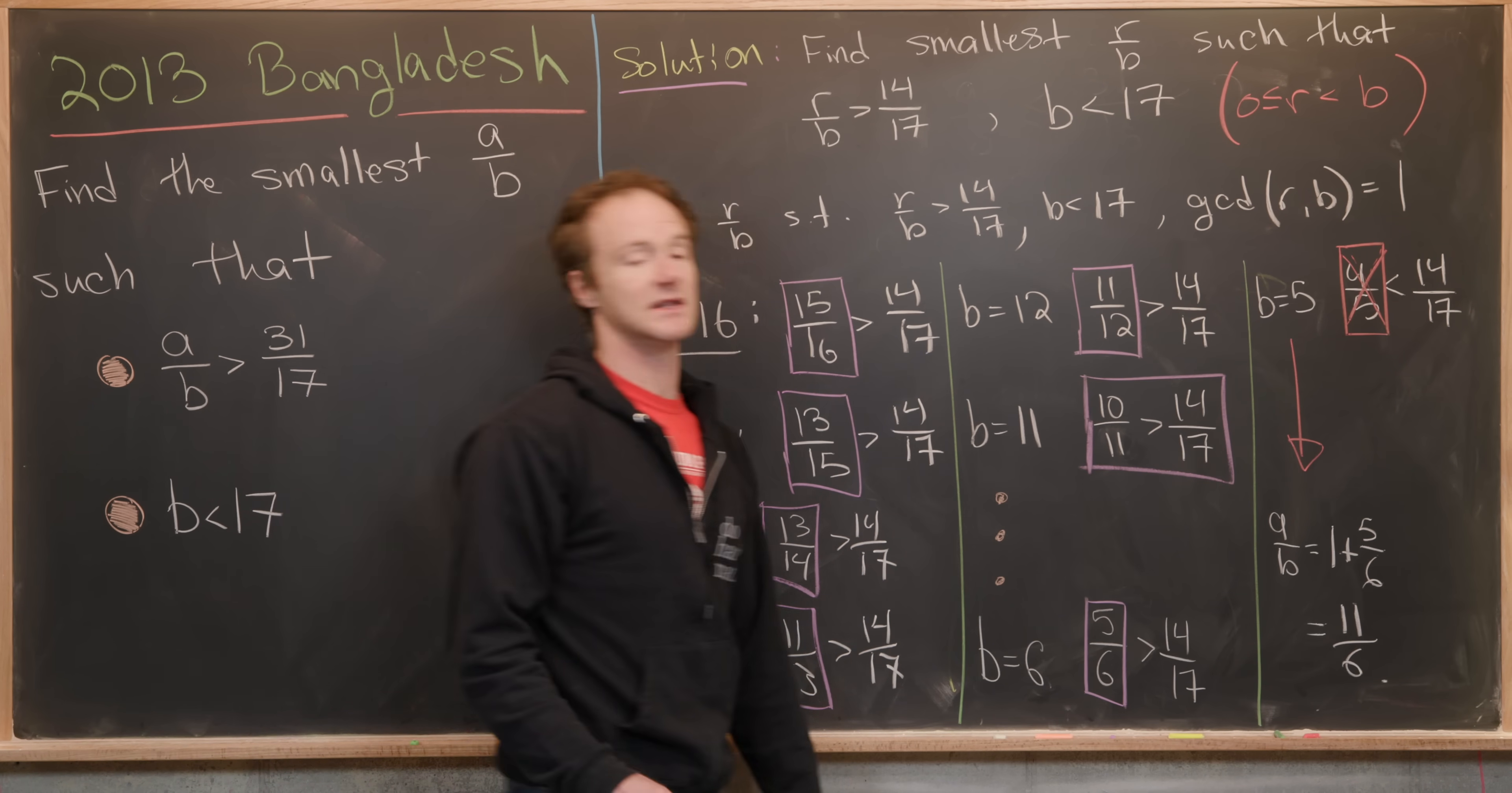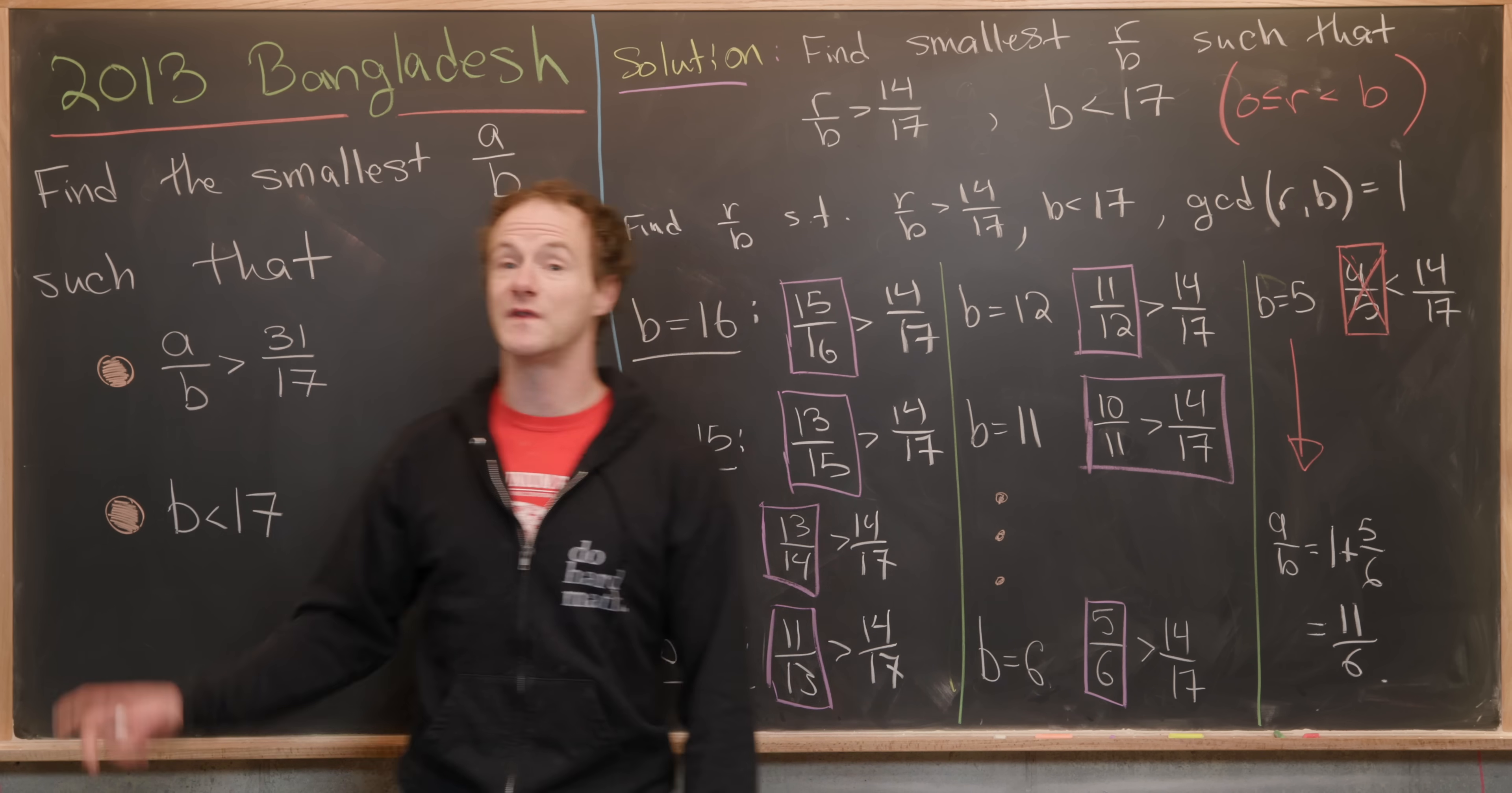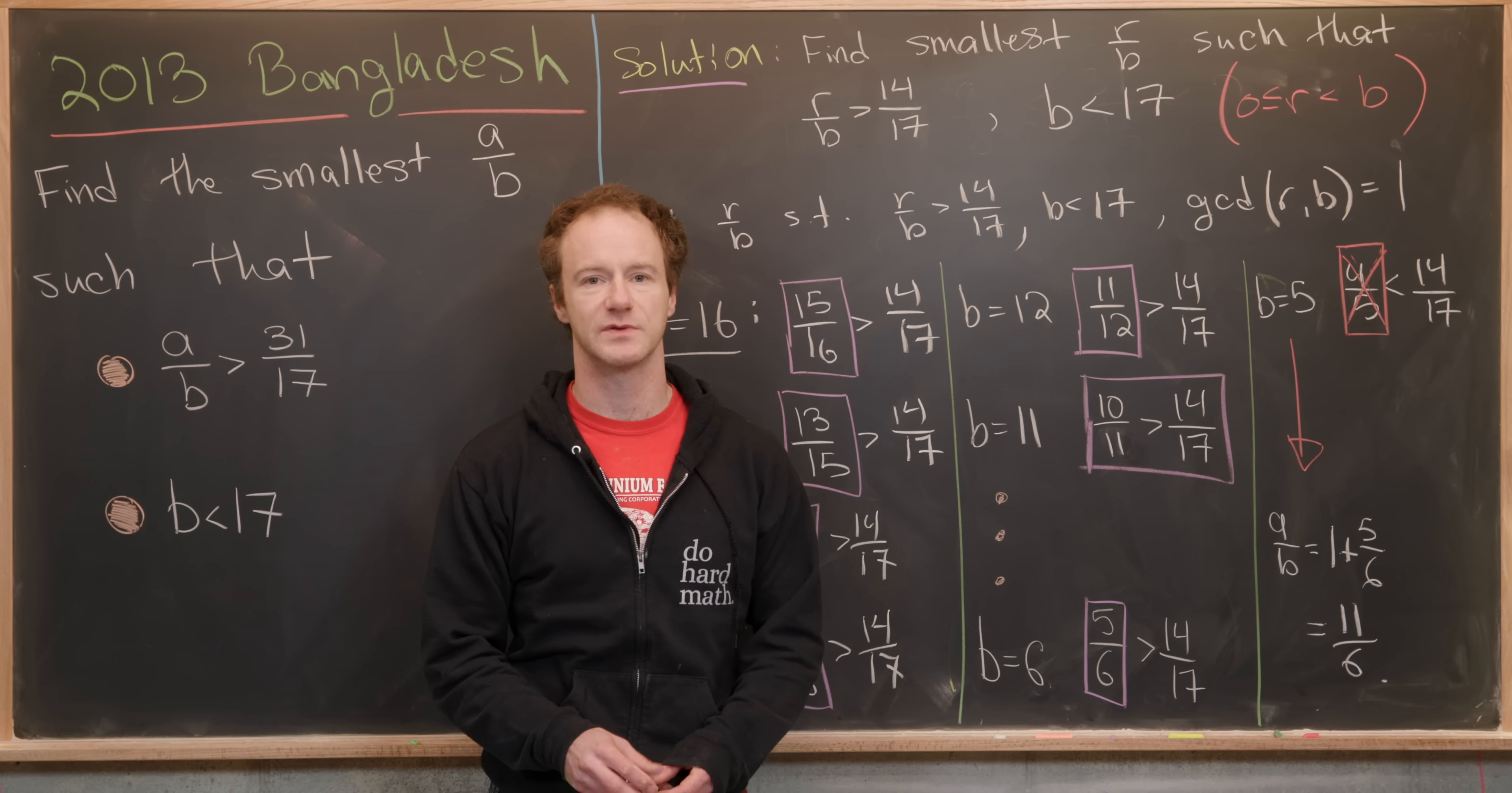So our A over B is 11 over six. And that's the number that we're looking for. That's a good place to stop.